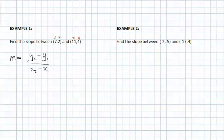So it doesn't matter if you pick this one to be your x sub 1, y sub 1, and this one to be your x sub 2, y sub 2. You just can't get them confused in the middle of your process.